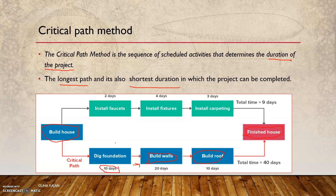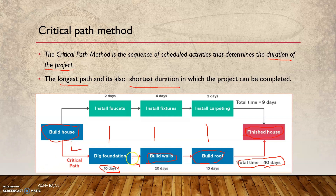Similarly, during build roofing you can do the carpeting as well. These activities are not on the critical path — only the activities that determine the total duration are. If you look at it, the total duration of the project is going to be 40 days. The faucets activity of about 9 days can be fitted anywhere among these activities and doesn't impact the schedule. Only whichever task or activity is on the critical path is going to impact the schedule of the project if there is a delay. For example, if dig foundation instead of finishing on day 10 spills over to day 11 or 12, you naturally cannot start the build wall activity — it will be pushed later.